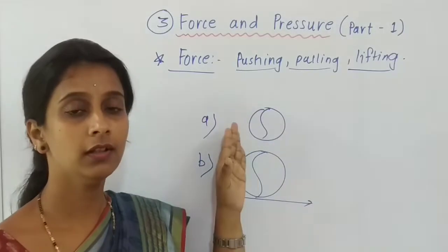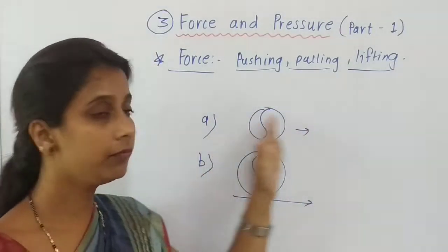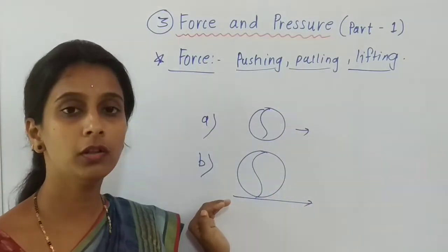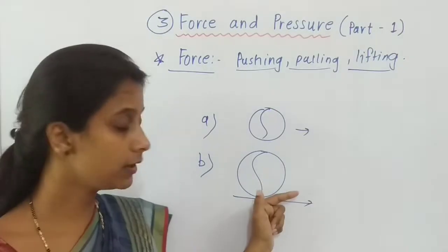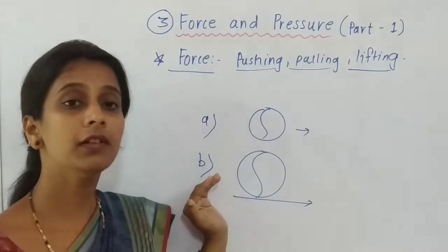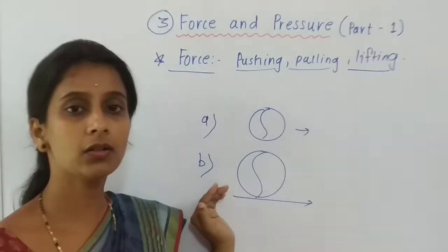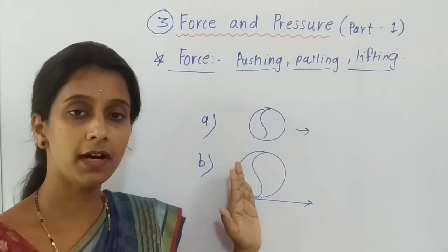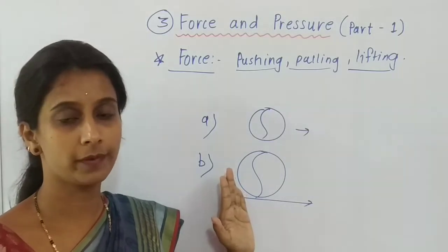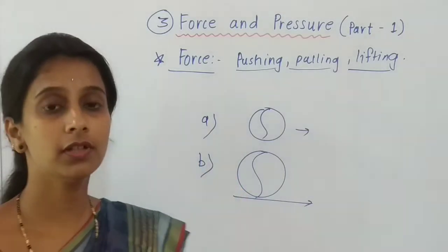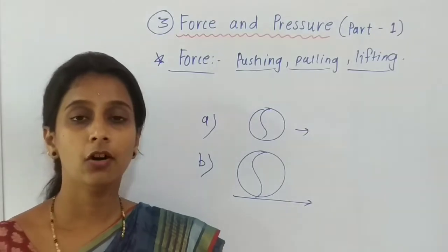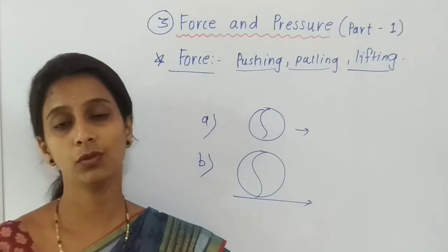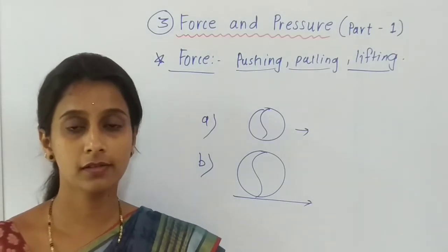If we push ball A, it gets speed and starts moving. In the case of ball B, which is already in motion, it will remain in motion until we act some force on it. If we apply force, either it goes fast, goes slow, or it stops. So Newton's first law states that an object will remain in motion or remain at rest until another force acts on it.